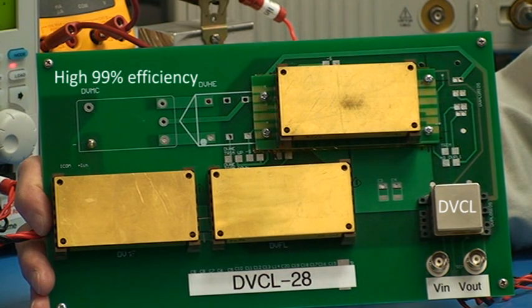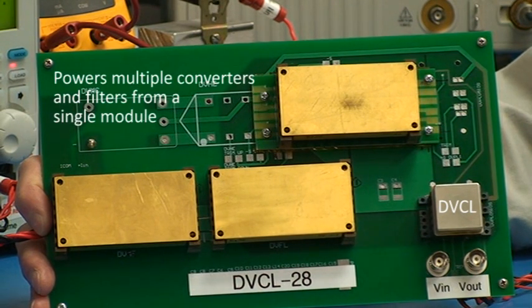The efficiency is very high, about 99%, and a single DVCL can power multiple EMI filters, and multiple DC-DC converters, up to its power rating.